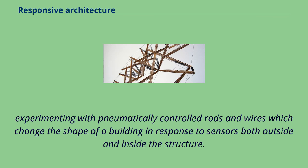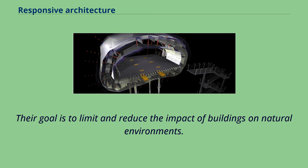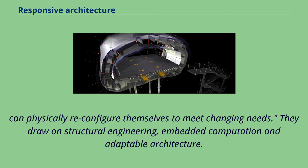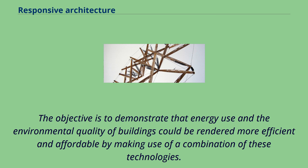Experimenting with pneumatically controlled rods and wires which change the shape of a building in response to sensors both outside and inside the structure, their goal is to limit and reduce the impact of buildings on natural environments. MIT's Kinetic Design Group has been developing the concept of intelligent kinetic systems, which are defined as architectural spaces and objects that can physically reconfigure themselves to meet changing needs. They draw on structural engineering, embedded computation and adaptable architecture, with the objective to demonstrate that energy use and the environmental quality of buildings could be rendered more efficient and affordable.